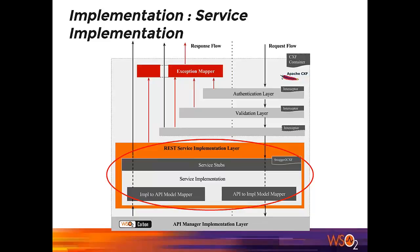Basically, in the API we have decoupled the underlying models from the models we share in the APIs. We have a special set of DTOs which represent the response schemas. This gives us flexibility to provide backward compatibility when the underlying modules change.